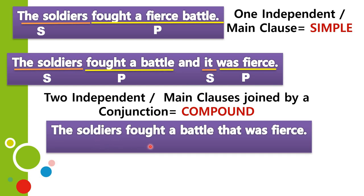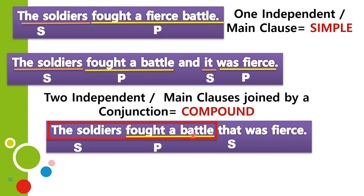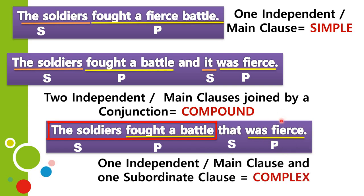Similarly, 'The soldiers fought a battle that was fierce.' Here 'the soldiers fought a battle' is the main clause. 'That was fierce' has the subject 'that' (a relative pronoun standing for 'battle') and predicate 'was fierce.' However, 'that was fierce' cannot stand on its own. Hence it is a dependent clause, and a sentence with one main clause and one dependent clause is called a complex sentence.